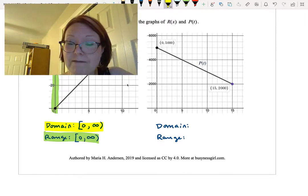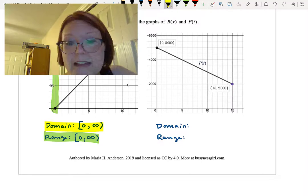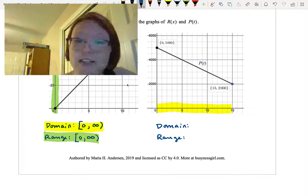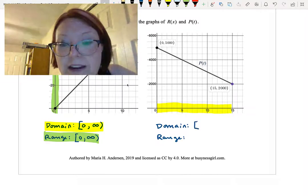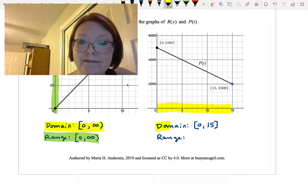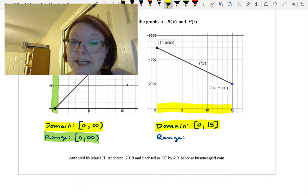The domain for this graph is the allowed values of x. So we have allowed values from 0 all the way to 15, stopping at both ends, which means our domain is going to be left bracket 0 comma 15 right bracket. The domain corresponds with the x-axis.